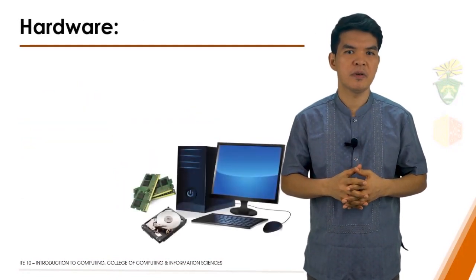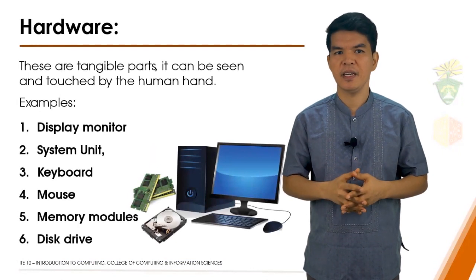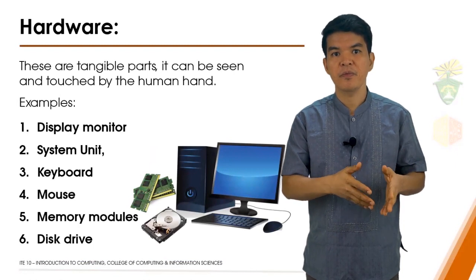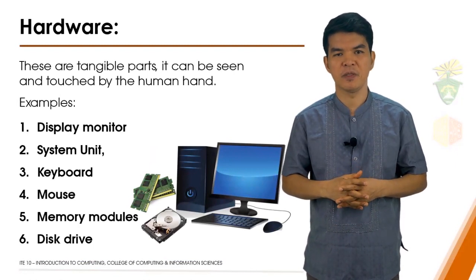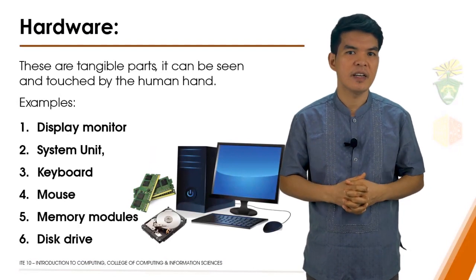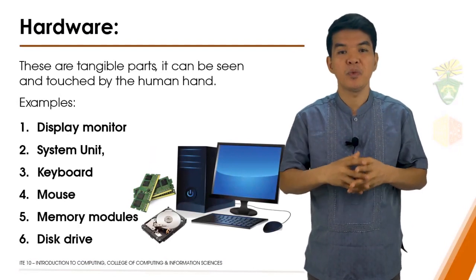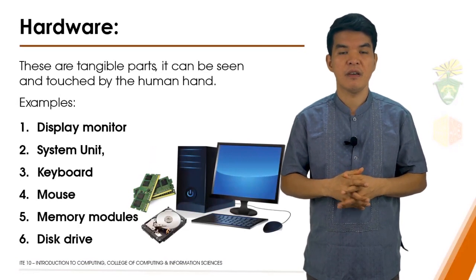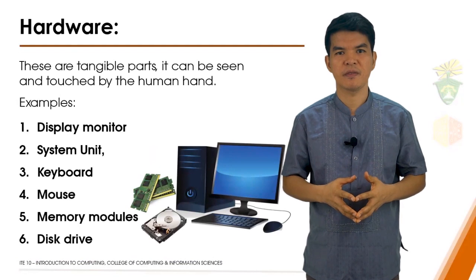The hardware components of a computer system are the electronic and mechanical parts. They help users interface with the software and also display the result of the task being performed. Hardware can actually be of many types, depending on which functions they perform, and these will be discussed further in the succeeding sections of this course.